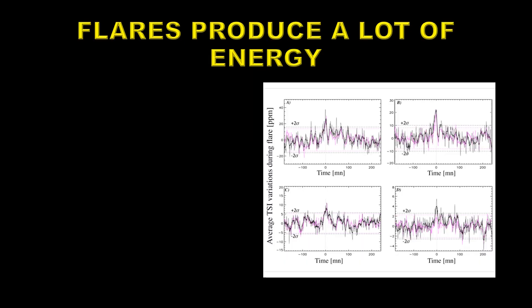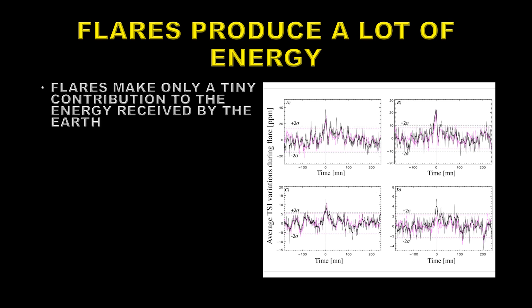Okay, what about flares? They produce a lot of energy, as we know. Flares make only a tiny contribution to the energy received by the Earth, though. You can see here four examples of flares being detected in the total solar irradiance. The scale on the left-hand side is parts per million. So this is 20 parts per million, just about the two sigma detection level. Three sigma is usually what we strive for. So all four examples here are only just barely detectable.